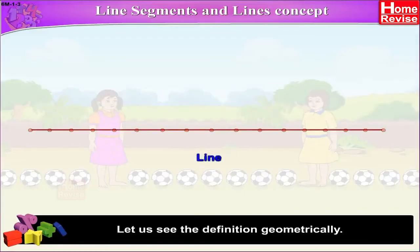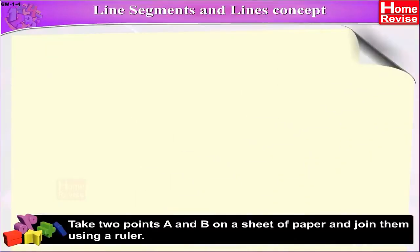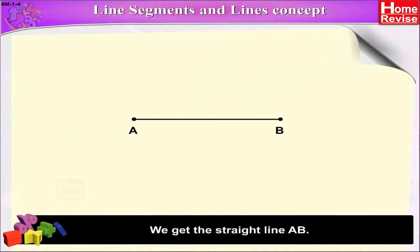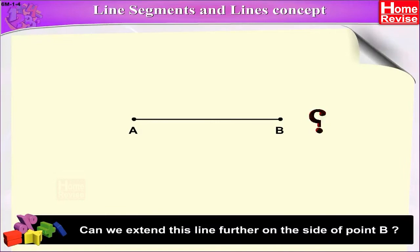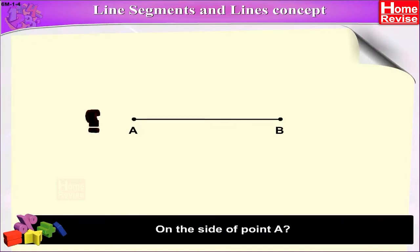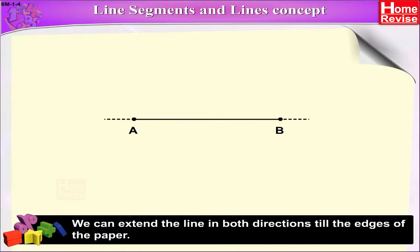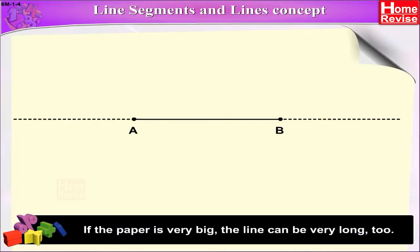Let us see the definition geometrically. Take two points A and B on a sheet of paper and join them using a ruler. We get the straight line AB. Can we extend this line further on the side of point B? On the side of point A? How far can we extend it? We can extend the line in both directions till the edges of the paper. If the paper is very big, the line can be very long too.